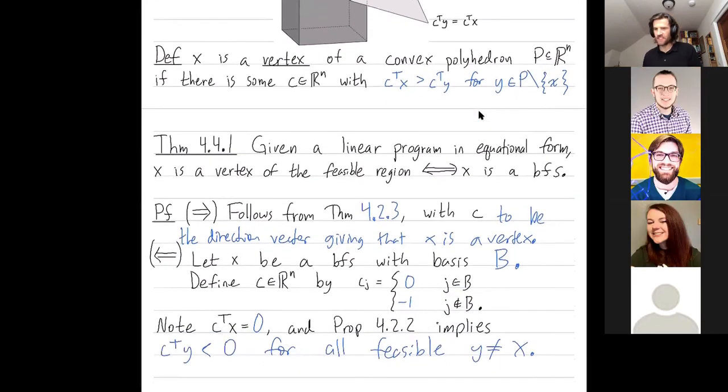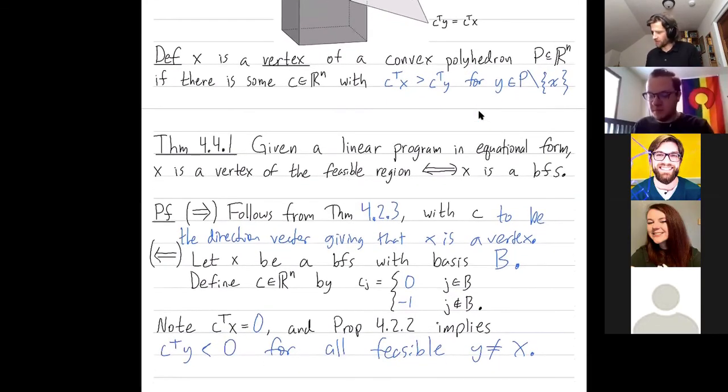So we're then done. Right? I've sort of satisfied the definition of a vertex. X is now a vertex because I've found this appropriate direction C, where C transpose X is strictly larger than C transpose Y for any other point Y in my polyhedron, which here is the feasible region. That might be the first proper proof we've mostly done together. Questions?